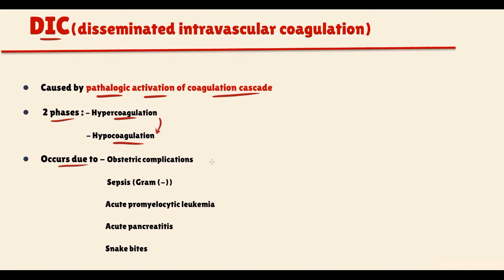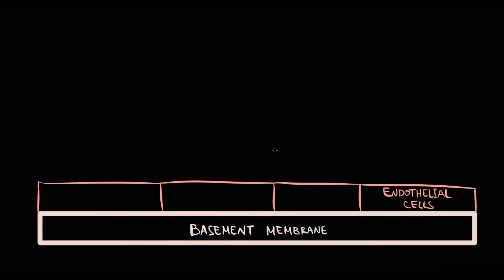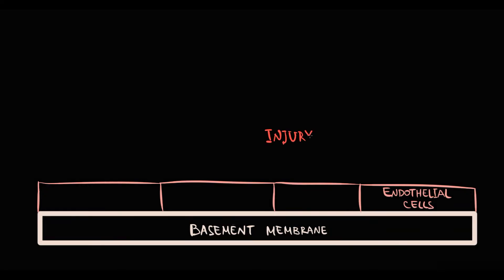Before discussing the pathology, we have to recall normal hemostasis. If damage to endothelial cells occurs, endothelin that was contained inside the endothelial cell will be released into the bloodstream and will cause transient vasoconstriction.